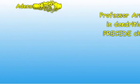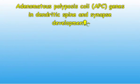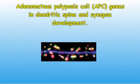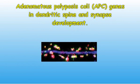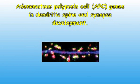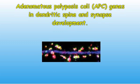He then studied the effect of Adenomatous Polyposis Coli, or APC, genes in dendritic spine and synapse development. APC is associated with the behavior found in autism and schizophrenia. These diseases are associated with abnormalities of dendritic spines in the front of the brain, known as the frontal cortex. The APC genes provide a signal for dendritic spine growth.